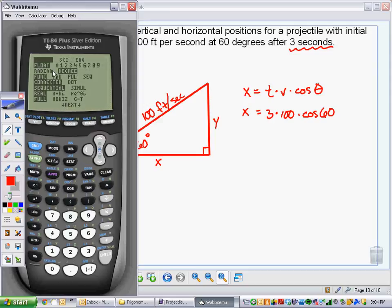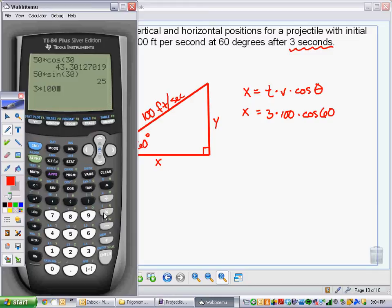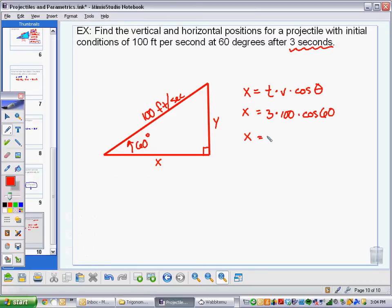My calculator should still be set in degrees. It should hold that. So I'll do 3 times 100 times the cosine of 60. That gives me 150. x equals 150 feet. That's how far it's gone horizontally in the x direction. It's gone 150 feet that way.